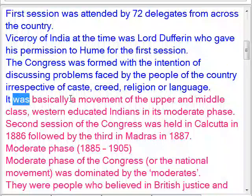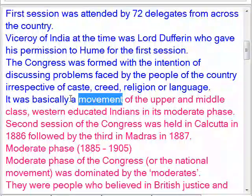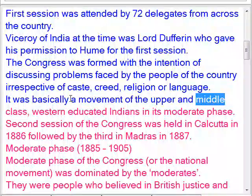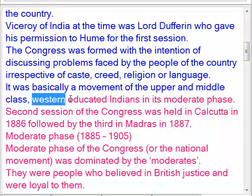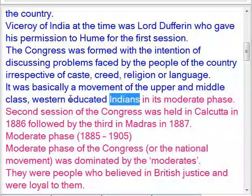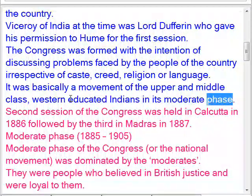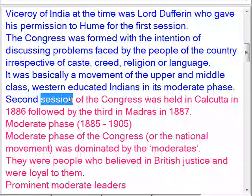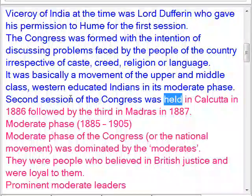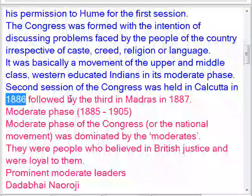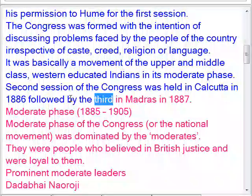It was basically a movement of the upper and middle class, Western-educated Indians in its moderate phase. The second session of the Congress was held in Calcutta in 1886, followed by the third in Madras in 1887.